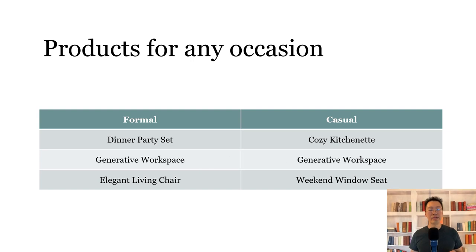Without merged cells, the screen reader reads: 'Generative workspace. Column header formal. Row three of four. Column one of two. Generative workspace. Column header casual. Column two of two.' Now it's very clear that generative workspace is both a formal and a casual product — you don't have to think hard to figure that out.